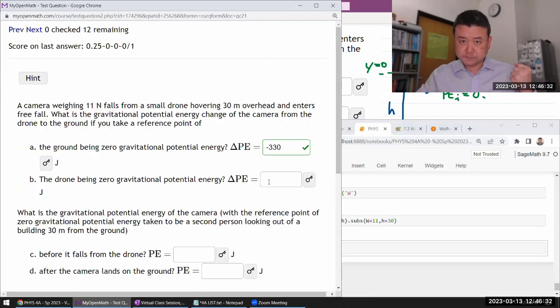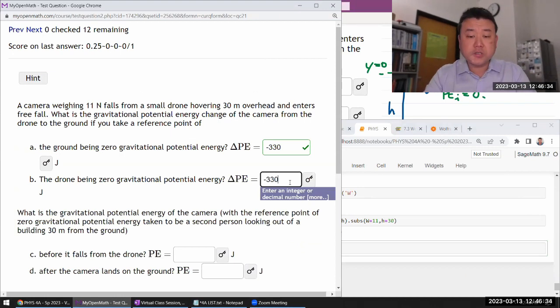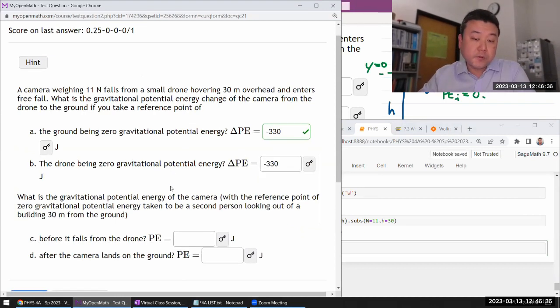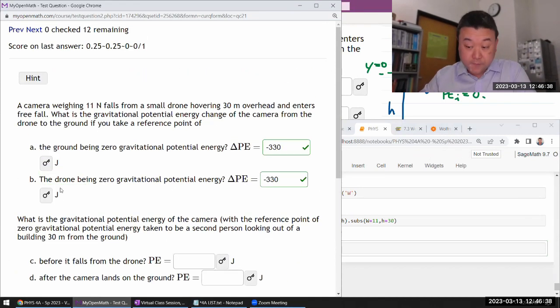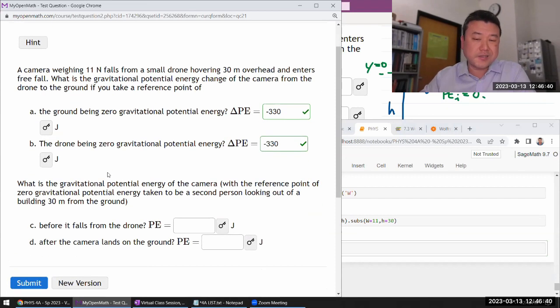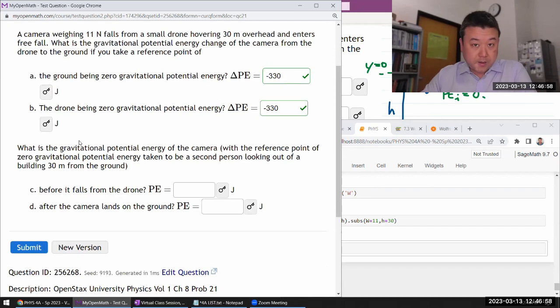So we do say this: that when you're dealing with the potential energy, the only thing that's meaningful, physically meaningful, is the difference of potential energy. The absolute value or whatever value of potential energy you might have doesn't have a physical meaning unless you have some agreement on what the reference point is. But when you're talking of difference in potential energy, it always has physical meaning.